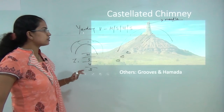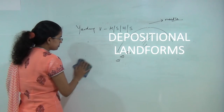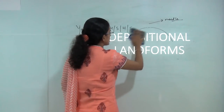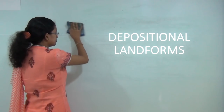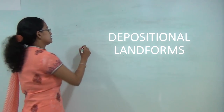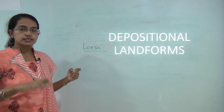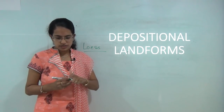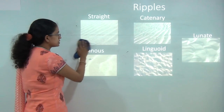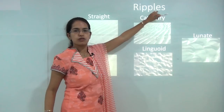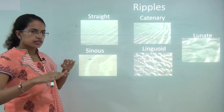Now we move on to depositional landforms. The most common depositional landform is loess — a kind of yellow or golden dust seen in most deserts, commonly in the Gobi desert and deserts around China. The next is ripples: small movements that create wave-like patterns on the surface of desert regions.